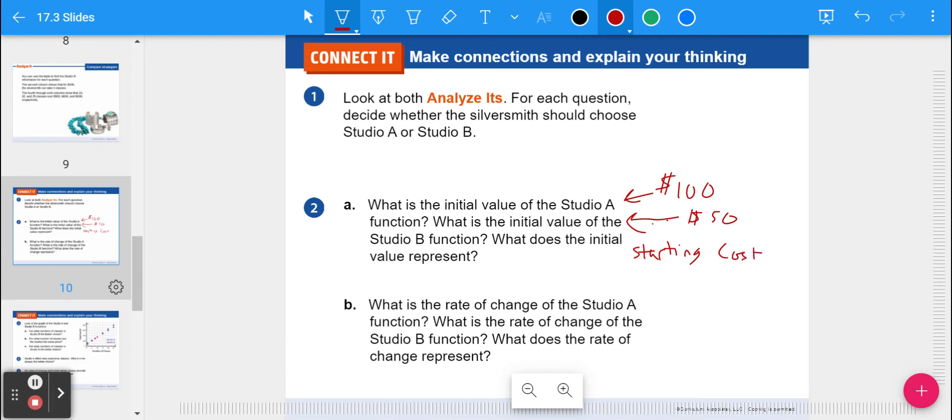Now B says, what is the rate of change for Studio A? Again, that was on the phone. That was $25 per class. And what is the rate of change for Studio B? Well, we figured out from the rate of change in the table that it was $30 per class. And what does the rate of change represent? Well, it's the cost per class.